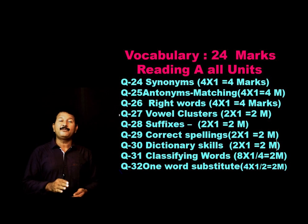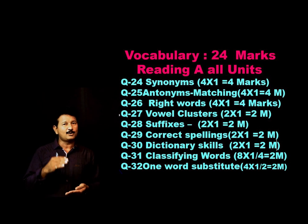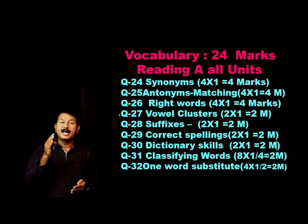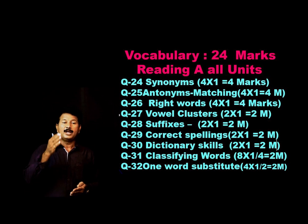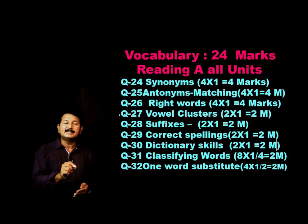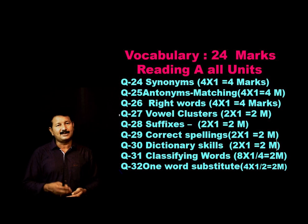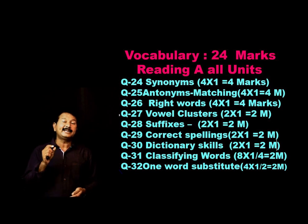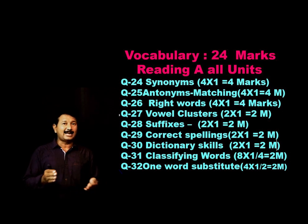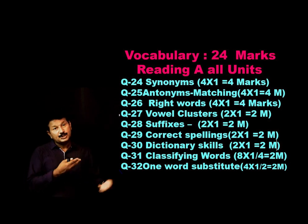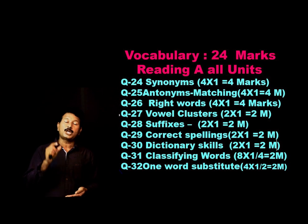Question number 25 is antonyms — there will be a passage with context, and A, B, C options. Students should answer carefully — just write the question number and then A, B, or C as the answer; no need to write the full answer. Question number 26 is right forms or other word forms. Read all text thoroughly, unit by unit — these are four marks. Alternative types will be given. For example, 'I want to make friendship' — identify the correct word form. Once you identify it from the text, you can easily score these four marks.